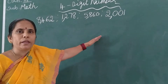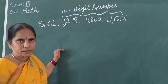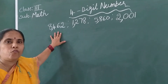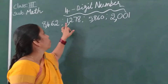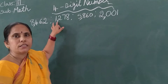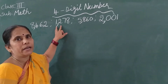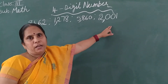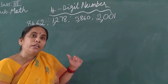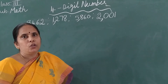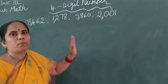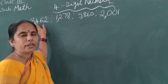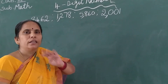Here I wrote so many 4-digit numbers: 8, 4, 6, 2 — this is one 4-digit number; 1, 2, 7, 8 — this is another 4-digit number; and like that the others. Now you must know how to read a 4-digit number. While reading, first you must know the places — the place value of each digit. Then only can you read the 4-digit number.